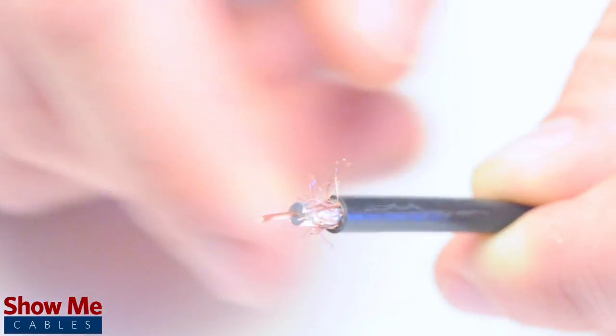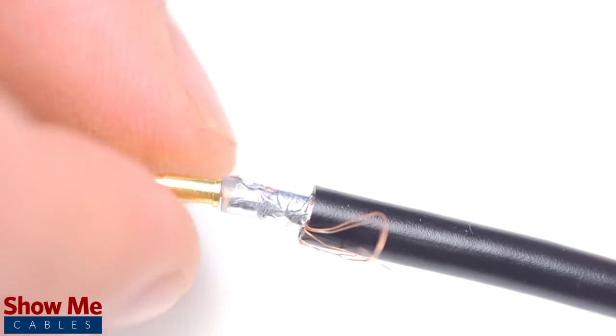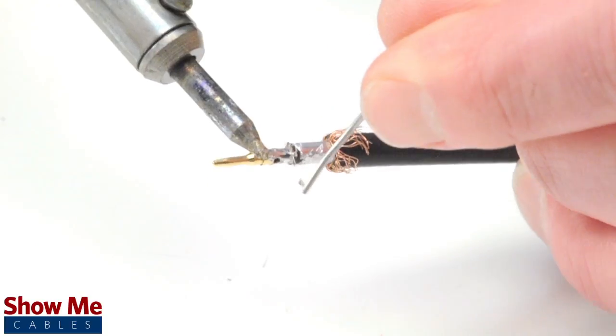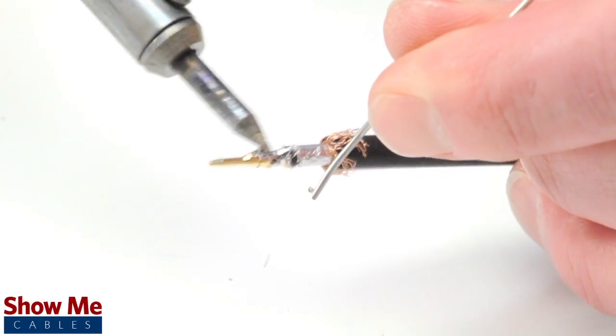Pull back the braided shield and insert the pin onto the center conductor. Solder the pin onto the center conductor and insert the connector housing over the cable.